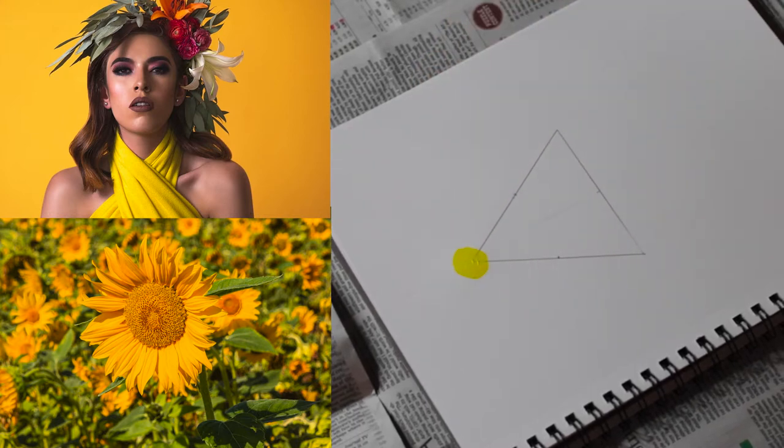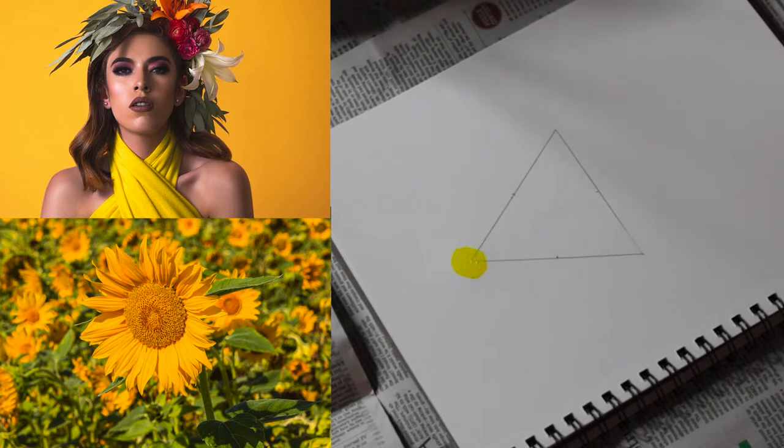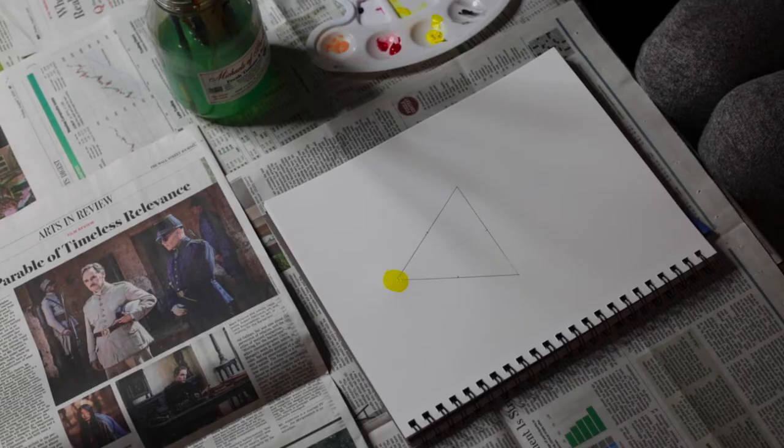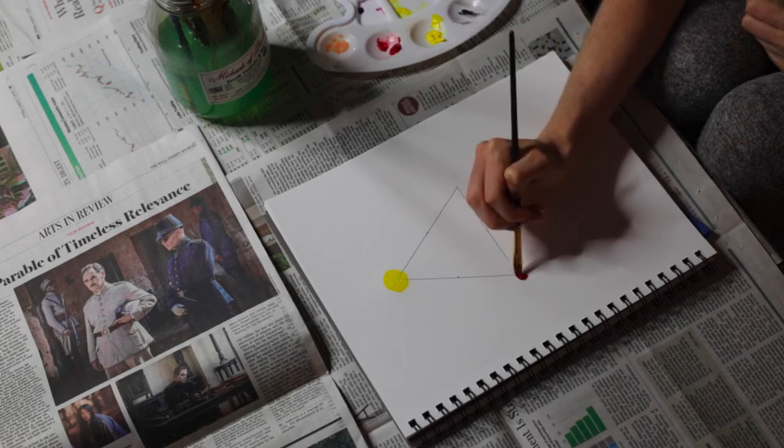But then of course, a lot of colors also have negative connotations, including yellow. For example, it could also represent betrayal or cowardice, having an ego, madness. So there's definitely a dark side to such a bright color as well, but that is yellow.